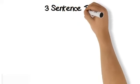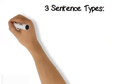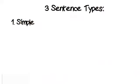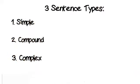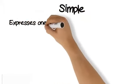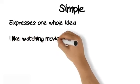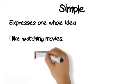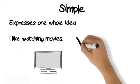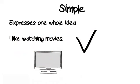The three different sentence types are: one, simple; two, compound; and three, complex. The first type of sentence is a simple sentence. It expresses one whole idea and one idea only. So let's have a look at an example: 'I like watching movies.' One idea is expressed here and it makes total sense on its own.